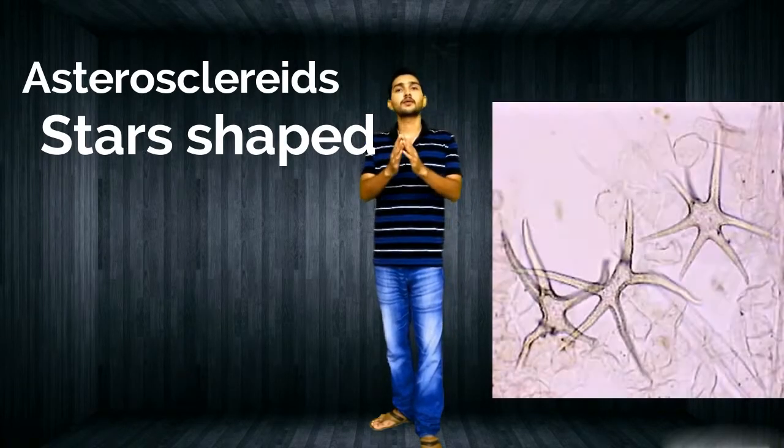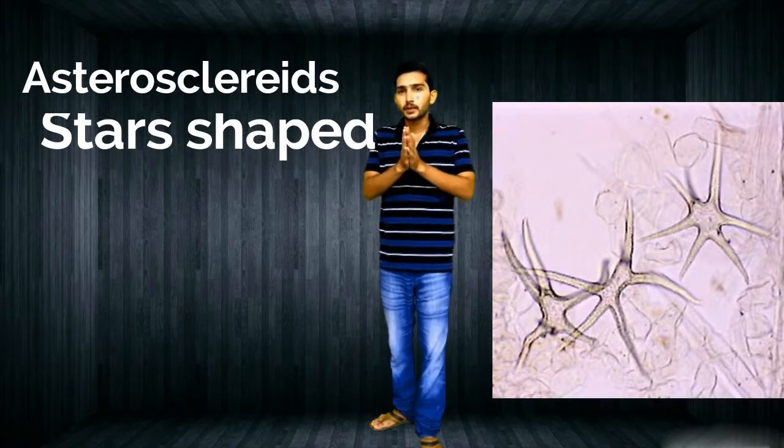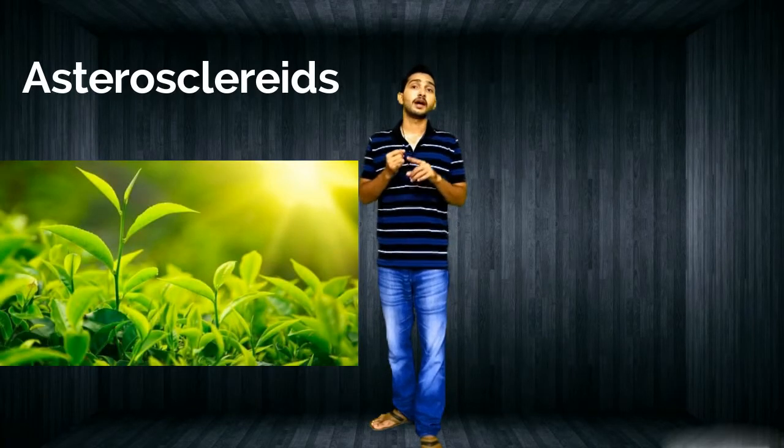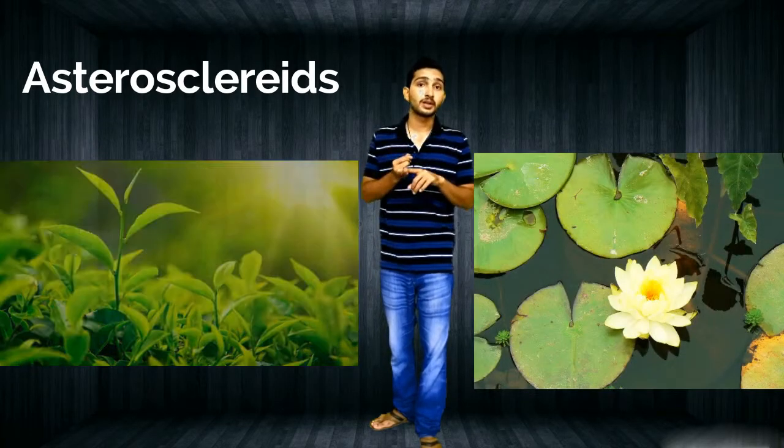Now let's talk about astrosclerids, which means star-shaped. These are branched and appear like a star shape. We can mainly see this type in petiole and leaves. Examples include pea leaves, Trochodendron, and lotus.